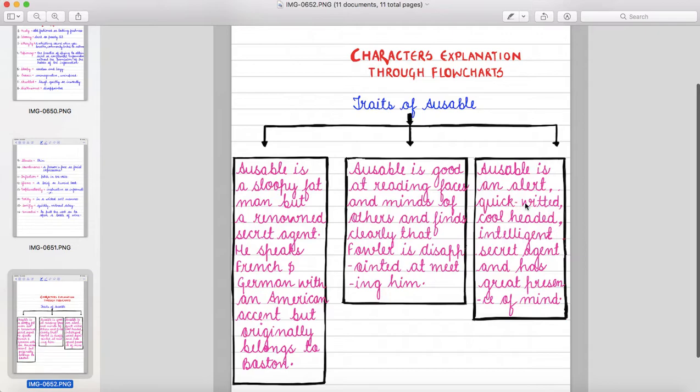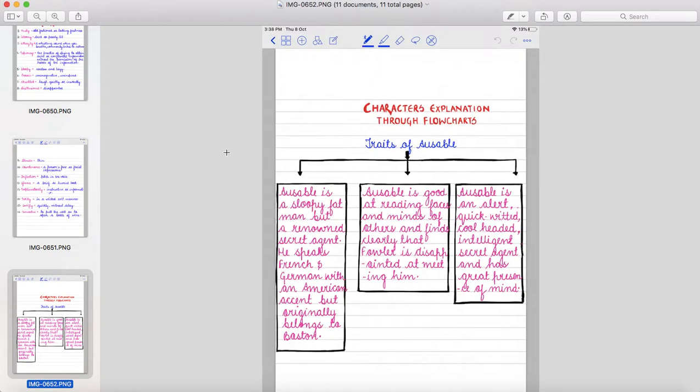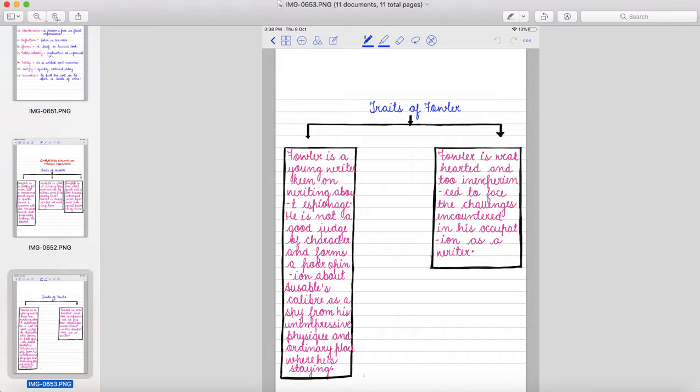Ausable is good at reading faces and minds of others and finds clearly that Fowler is disappointed at meeting him. Ausable is an alert, quick-witted, cool-headed, intelligent secret agent and has great presence of mind. Okay?